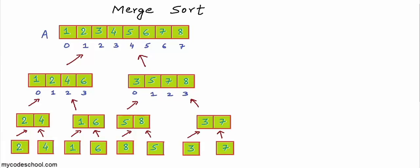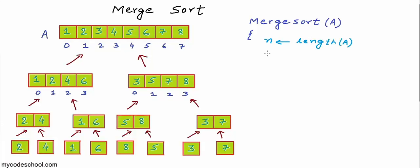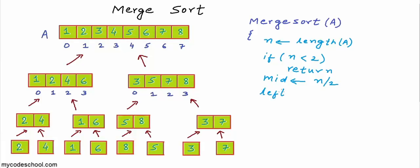Now let's write pseudocode for this algorithm. I will write a function named merge sort that takes an array A as argument. First I take a variable to store the number of elements in A, and we can partition A into two halves. We need to partition only if n is greater than 1. If n is less than 2, we have only one element — the array is already sorted, so we simply return. Otherwise we find a middle position and create two arrays: one of size mid and another of size n minus mid.